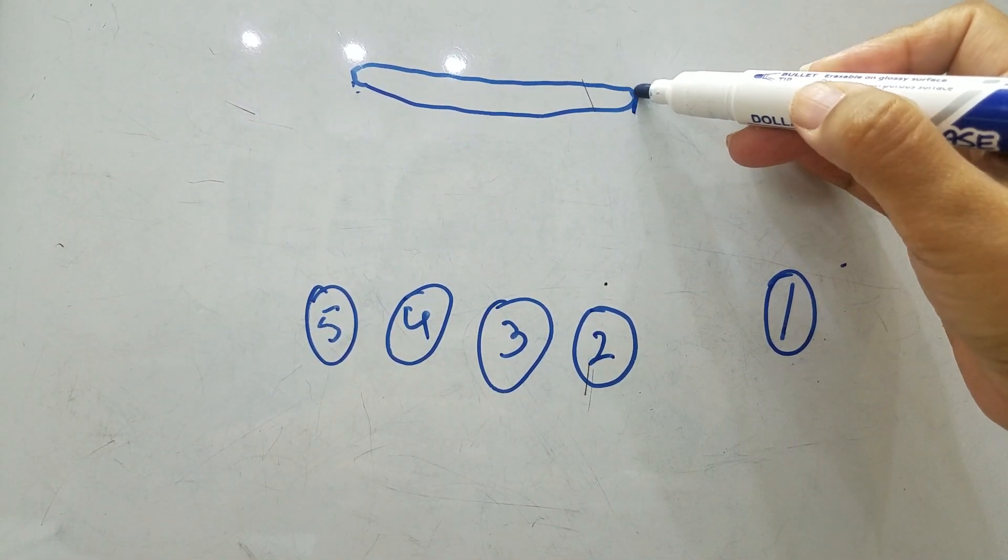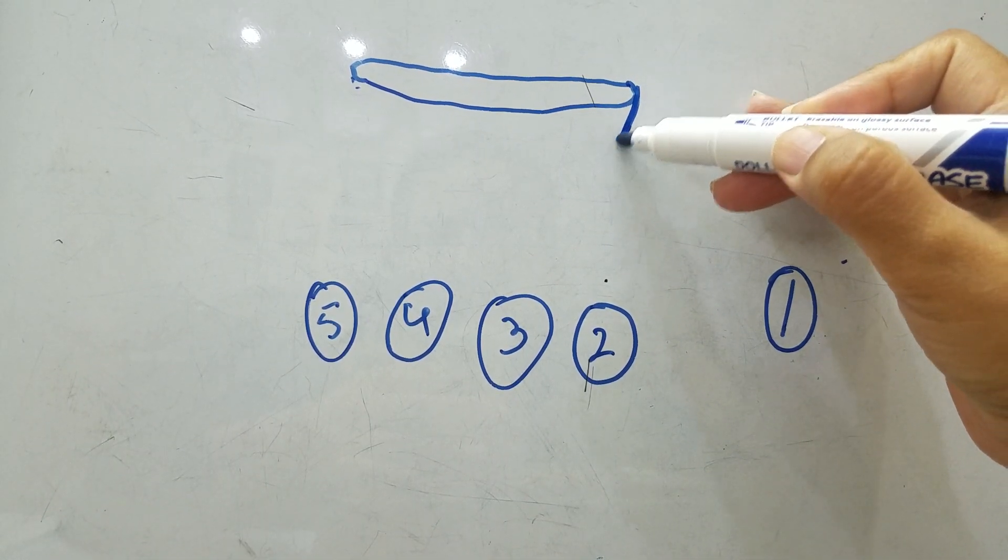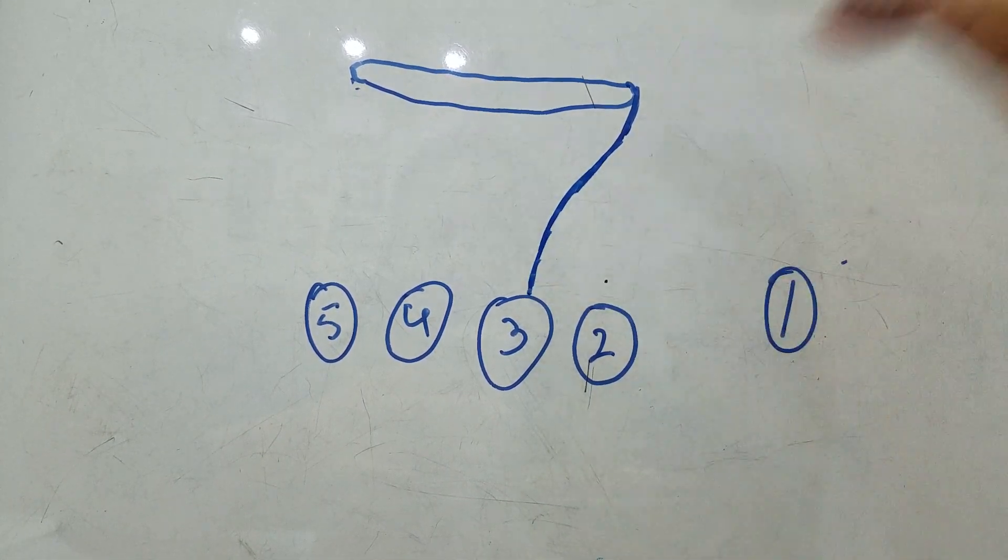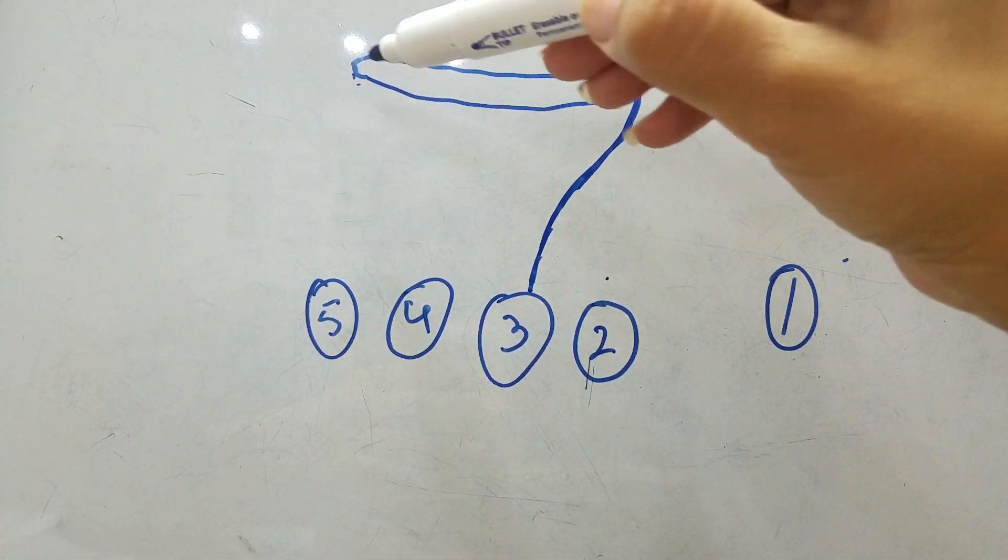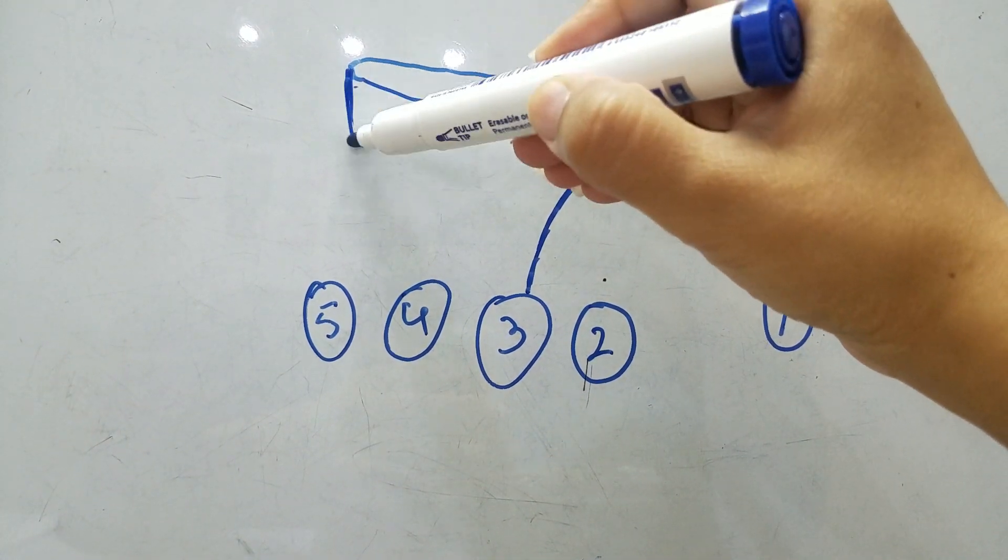On the lateral side, a septum originates from the lateral border of the palmar aponeurosis. It obliquely goes down and then attaches to the third metacarpal. And just like that, on the medial side you also have a septum which originates from the medial border.